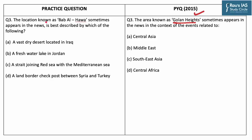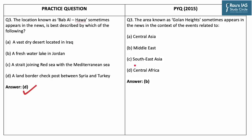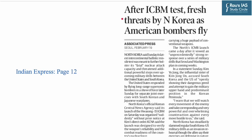The practice question states: the location known as Bab al-Hawa, which sometimes appears in news, is best described by which of the following — (A) a vast dry desert in Iraq, (B) a freshwater lake in Jordan, (C) a strait joining the Red Sea with the Mediterranean Sea, or (D) a land border checkpost between Syria and Turkey. The correct answer is option D. Bab al-Hawa is located to the west of Aleppo in Syria and is a crossing on the Turkey-Syria border. Along with Bab al-Salam, the UN is sending aid through these two crossings to earthquake-hit Syria.